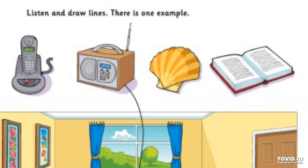Three. Can you see the bird next to the plane? Pardon? Which bird? The bird next to the plane — it's got a very long tail. Oh yes, I can see it. Color it green. Right. I'm coloring it green now.